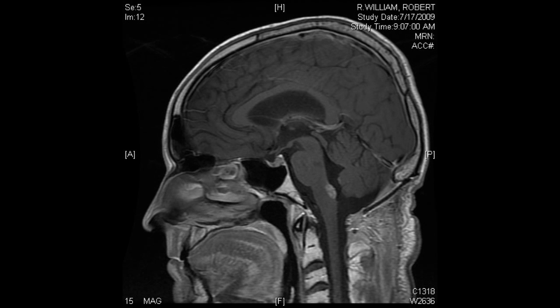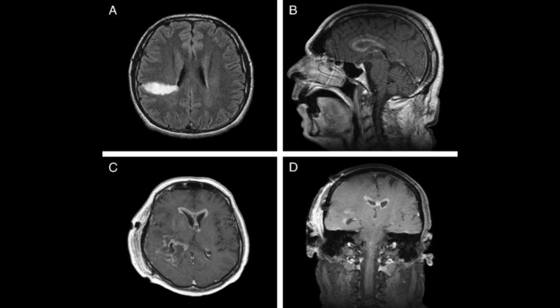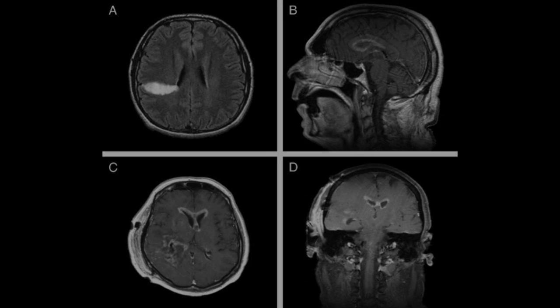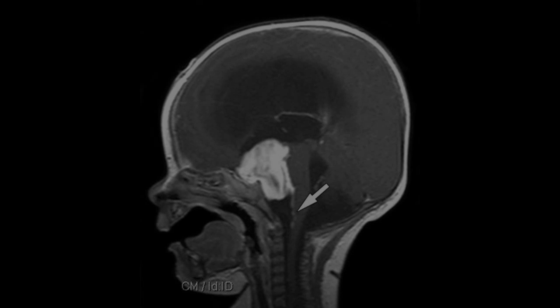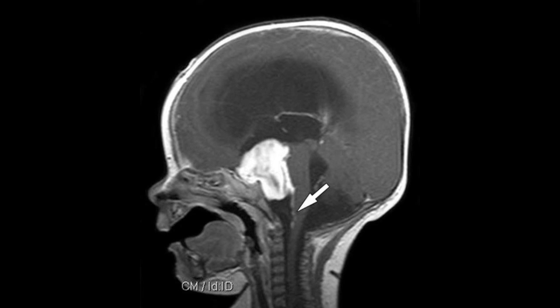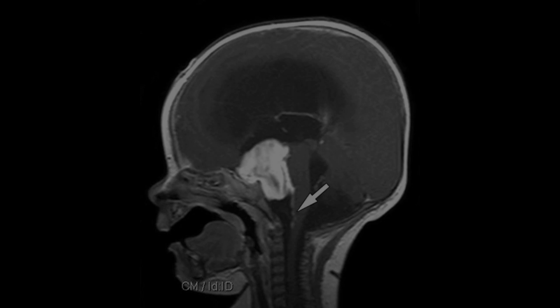Brainstem gliomas begin in the glial cells in the brainstem. They occur mainly in children between the ages of 3 and 10, but occasionally occur in adults. They can range from low to high grade, and symptoms include headaches, nausea, speech or balance problems, swallowing difficulties, weakness or numbness in the arms, legs, or face, and double vision.